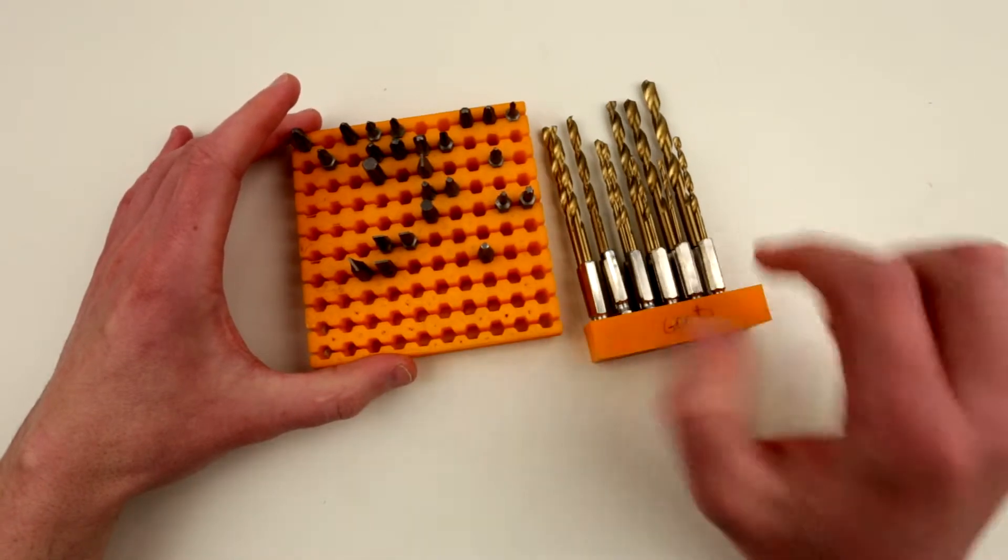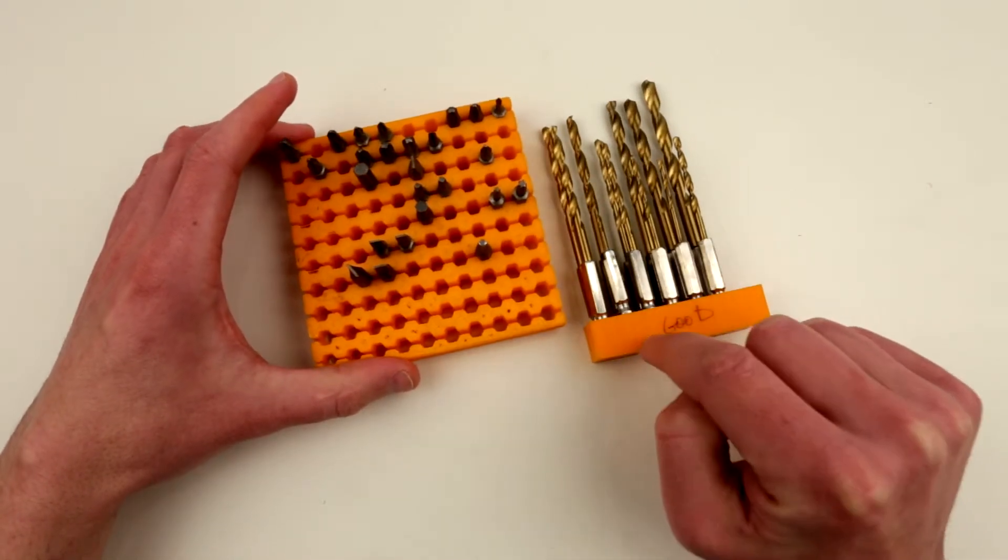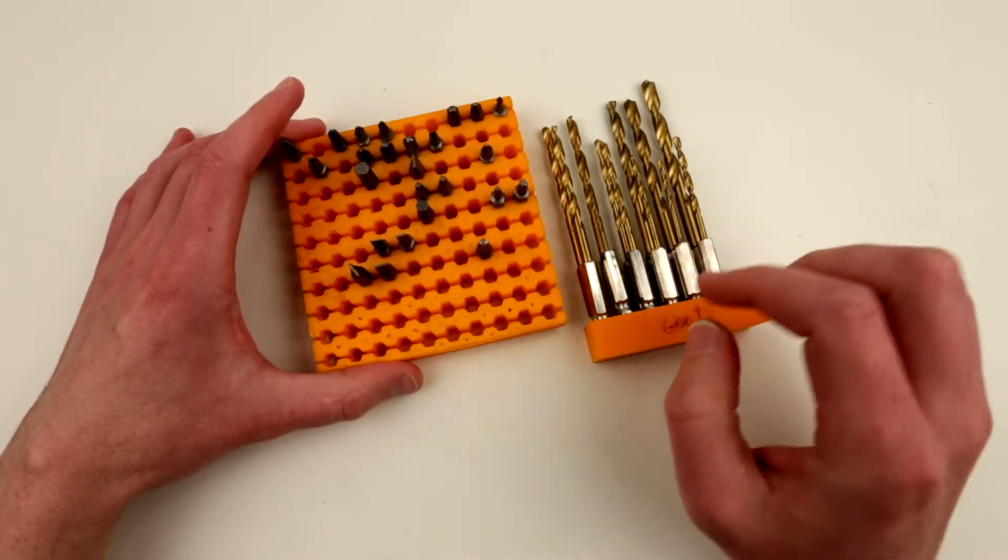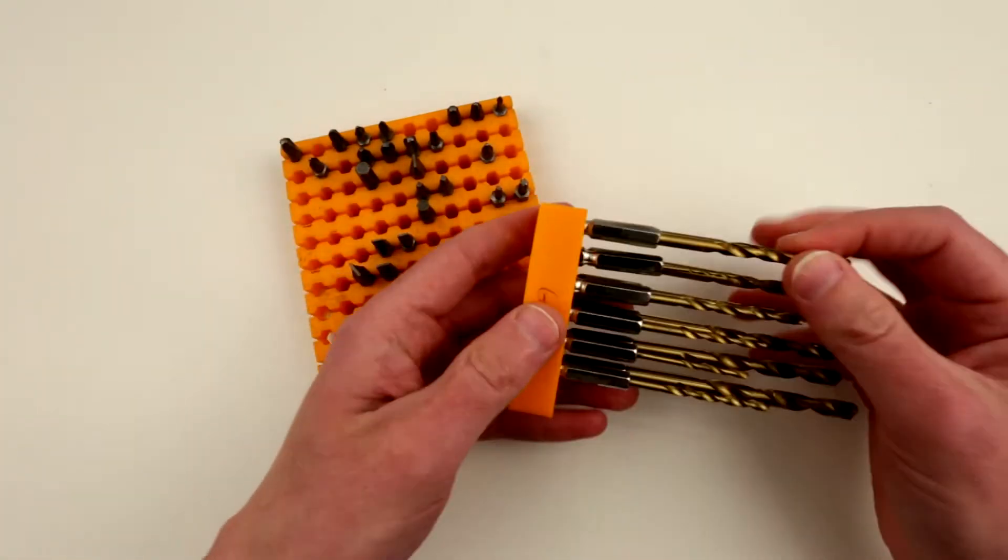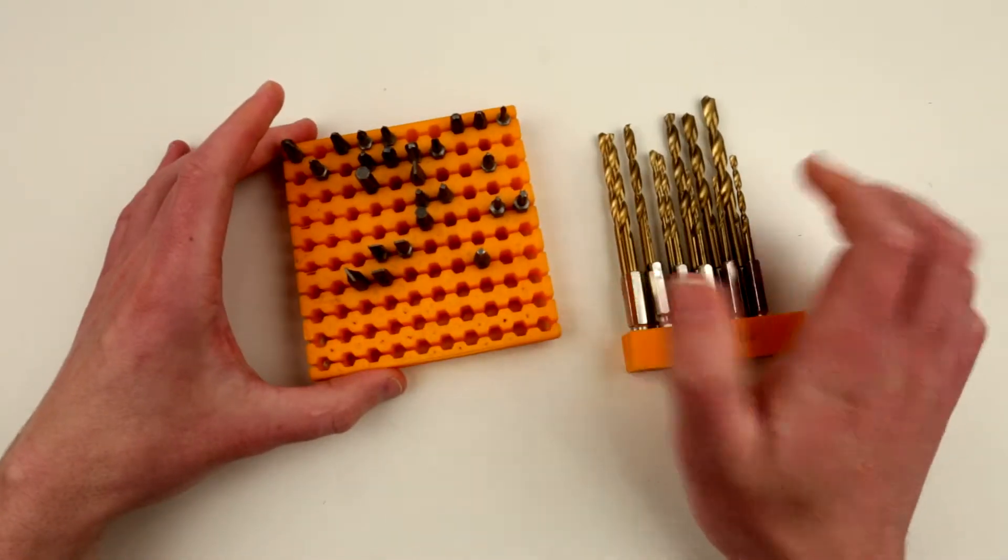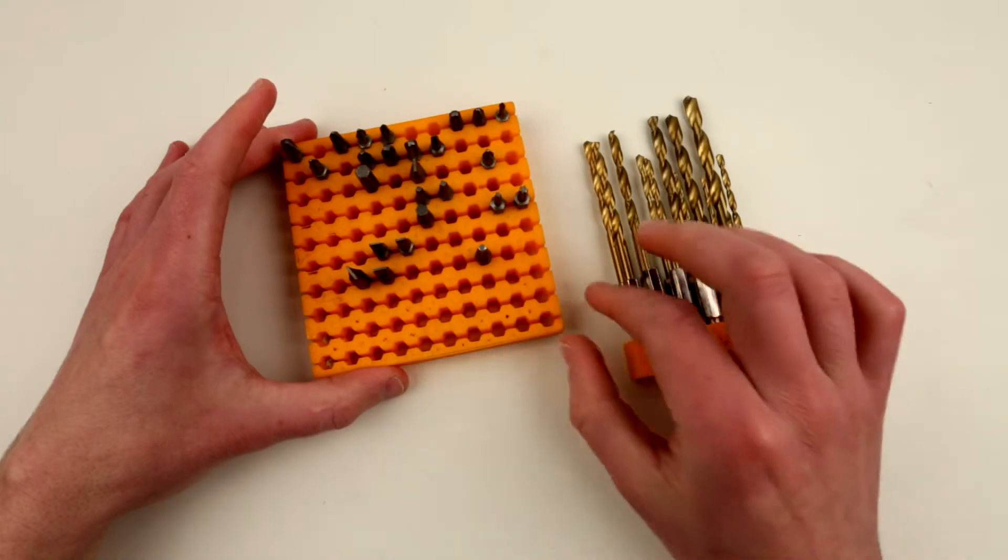I also would like to actually print one in Ninja Flex or a flexible material to see if that's going to be even better. Because if it's flexible, it's going to nicely hold the bits on this organizer.